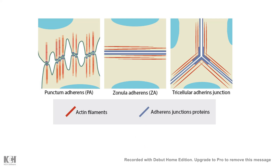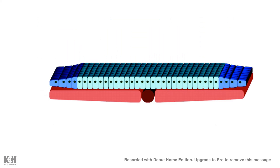There can be multiple different types of adherence junctions. Sometimes they are punctate and are known as punctum adherens. Sometimes they form a zone or band and are known as zonula adherens. There can also be more complex tricellular adherence junctions as well.